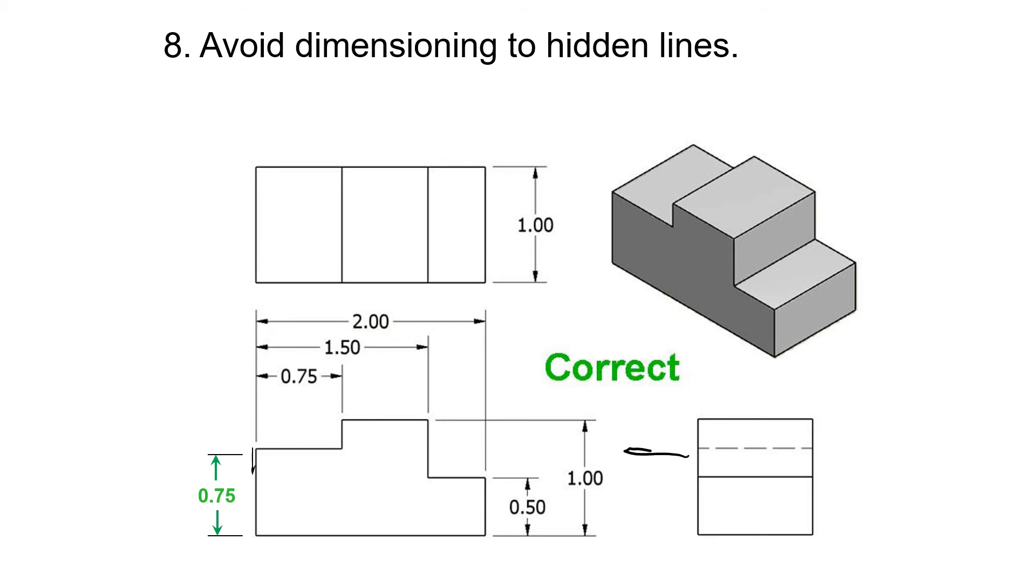But like they just said, the only way to do that would be to dimension to this hidden line. You don't want to dimension to a hidden line ever if you could avoid it. It's better if it's at least to an object line so you can kind of see it clearly. It's all about what makes it clear to see.